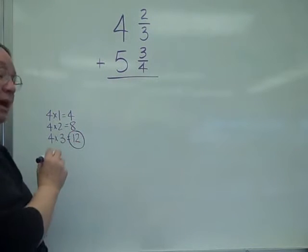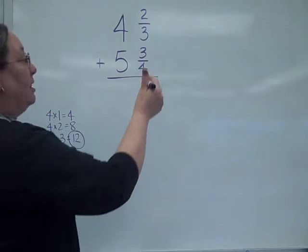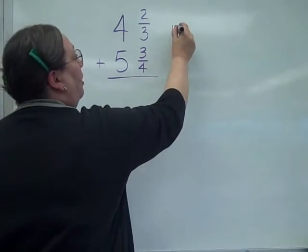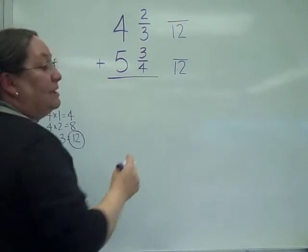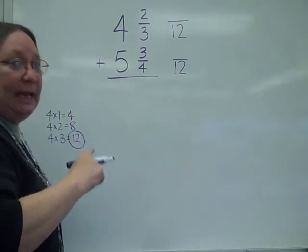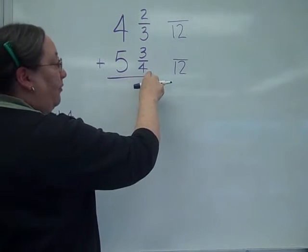12 then becomes my lowest common denominator. So at this point, I'm going to put the 12 in as my bottom number, and then I have to decide how did I get to the 12? Well, on this, the 4,